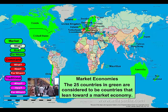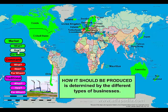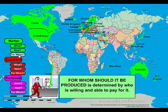So let's look at market economy. What is going to be produced is determined by the laws of supply and demand. How it should be produced is determined by the different types of businesses. For whom should it be produced is determined by who is willing and able to pay for it.